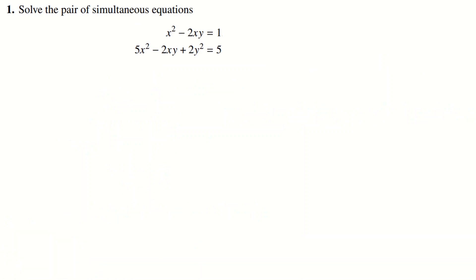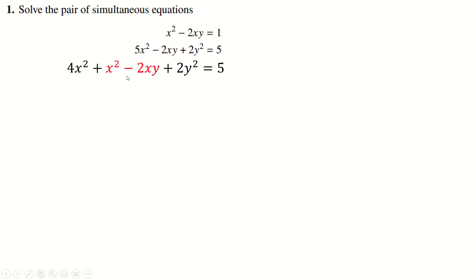So first question — in some ways it's very straightforward, because all we're being asked to do is solve these equations and there's no sort of problem solving. When you get questions like this, it's really just a case of trying lots of things until you stumble on something that works. What I decided to do was try to eliminate 2xy. I can write this as 4x plus x minus 2xy, because that makes 5x, and then replace this with a 1. When I move the 1 over and divide everything by 2, I get this simpler expression.